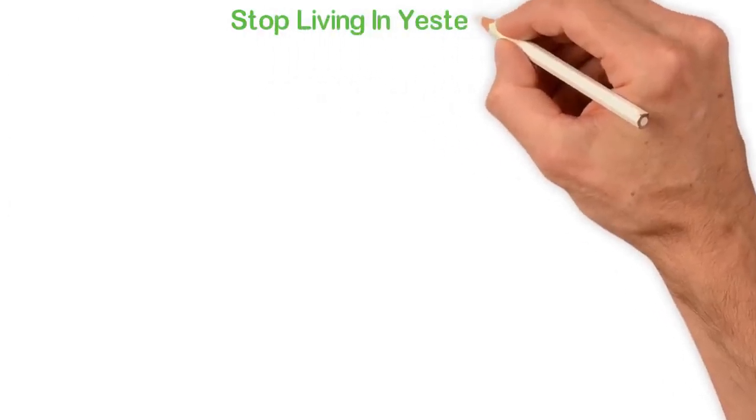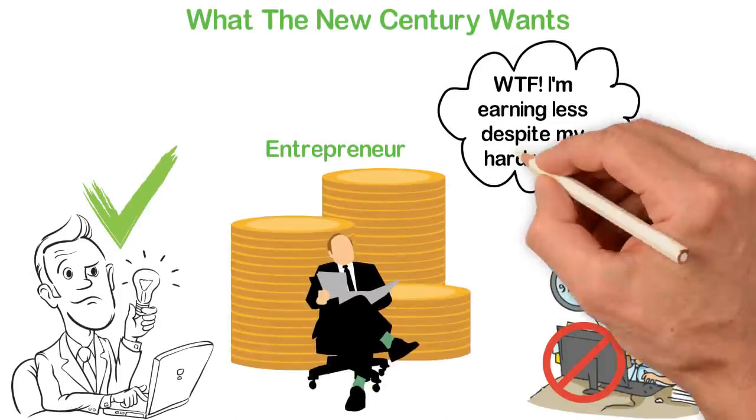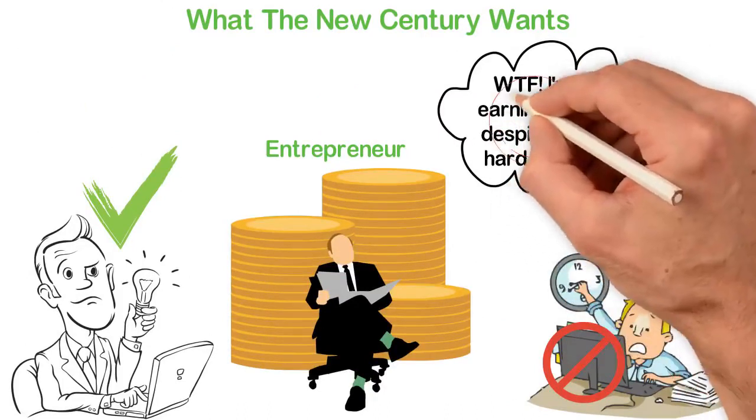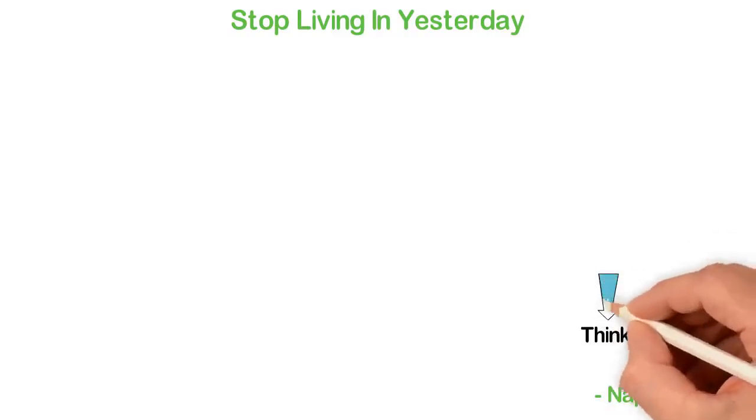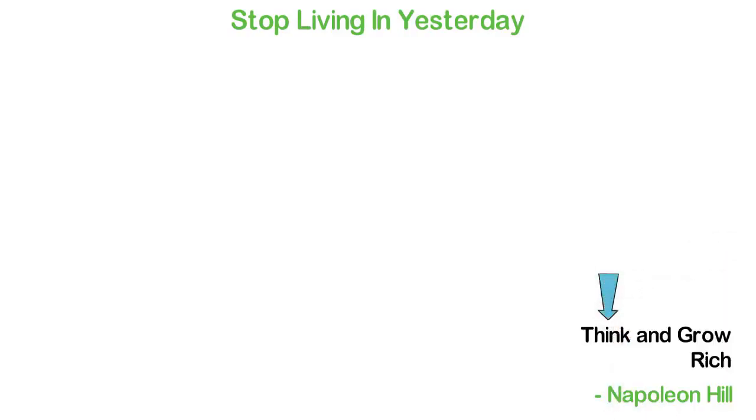Stop living in yesterday. Stop being in the 19th century. Stop thinking that hard work will make you rich. Napoleon Hill wrote arguably one of the best books on money. Hill did not call that book Work and Grow Rich. Even though he published the book in 1937, he called that book Think and Grow Rich. The key word here is think.